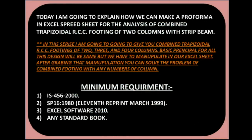Hello, I am P.S. Chargiu with you. Today I am going to explain how we can make a proforma in Excel spreadsheet for the analysis of a combined trapezoidal RCC footing of 2 columns with strip beam. In this series, I am going to cover combined trapezoidal RCC footing of 2, 3, and 4 columns. The basic principle for all these designs will be the same, but we have to manipulate our Excel sheets. After understanding that manipulation, you can solve the problem of combined footing with any number of columns.